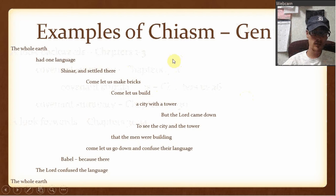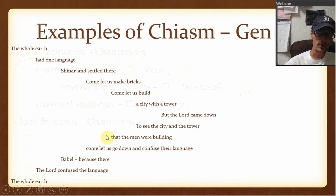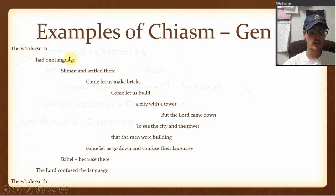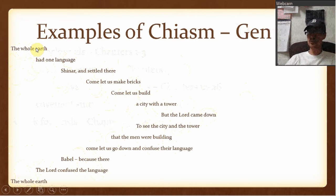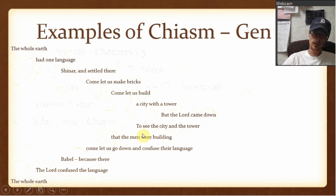The first one is from Genesis 11, verses 1 through about 12. If you notice, it both starts and ends on the same point: 'the whole earth' and 'the whole earth.' The middle point is 'but the Lord came down.' So: the whole earth had one language, Shinar settled there, come let us make bricks, come let us build a city with a tower, but the Lord came. Then it goes right back to: see the city and the tower, a city with a tower that the men were building, come let us build, come let us go down and confuse our language, come let us make bricks, Babel because there, Shinar settled there, the Lord confused our language, had one language, the whole earth, the whole earth. See how chiasm works? It looks like a half of an X.